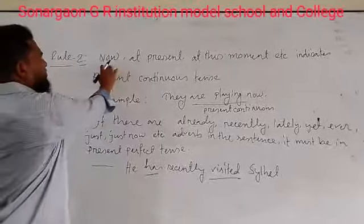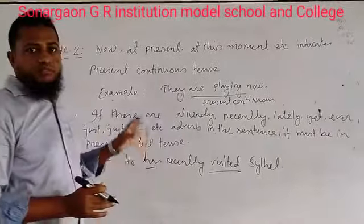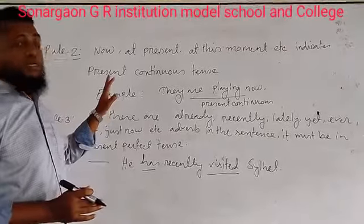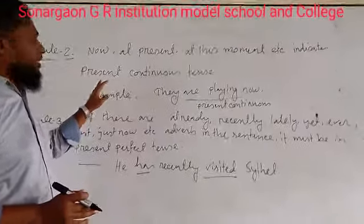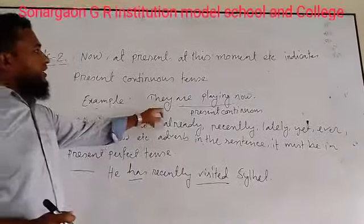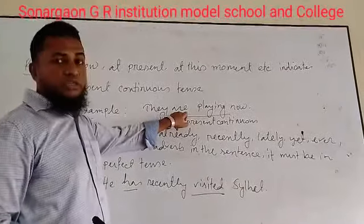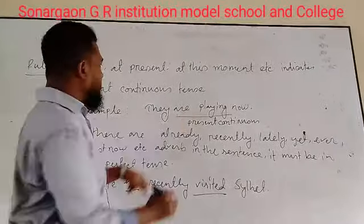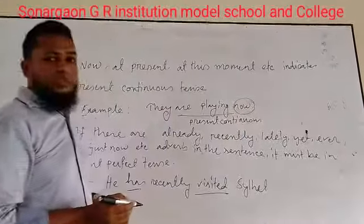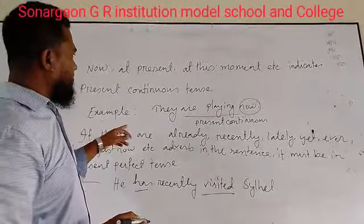If there is 'now', 'at present', or 'at this moment' in a sentence, these three adverbs indicate present continuous tense. For example: 'They are playing now.' This is an example of present continuous tense, and 'now' is the adverb that indicates present continuous tense.